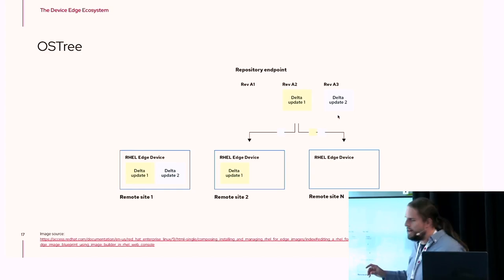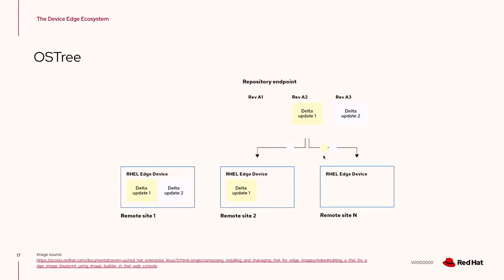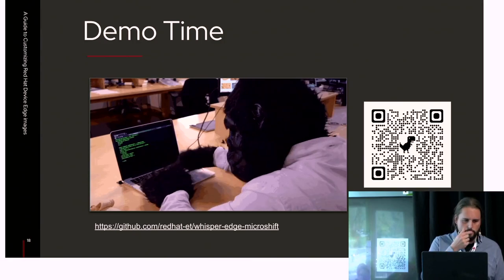OSTree is also able to do deduplication and manage the boot settings of your system. When you switch to a new version, it puts the new kernel in the boot partition and sets up anything in the etc directory that needs to be updated. You have a repository serving the OS tree — normally an HTTP server, but there is work to make this possible over a container registry so you don't need to set up your own infrastructure. The edge devices consume that repository, and you can see devices in different stages of receiving delta updates.